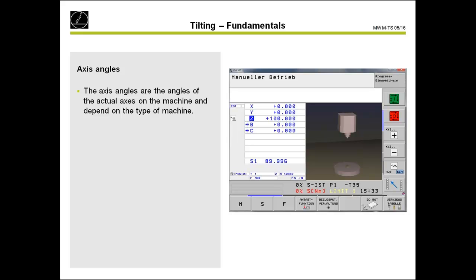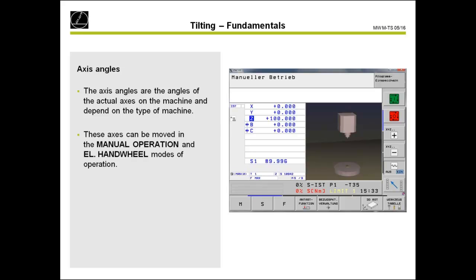In our machine, we have two different types of angles. First, there are the axis angles — the physical axes of the machine. It depends on the machine which axis angles are available. For example, for our example here, we have B-head and C-table. There are different other combinations possible, but what you see in the status display is the axis angle. You can also move this rotary axis with manual operation using the plus or minus keys to move the rotary axis to an axis angle.